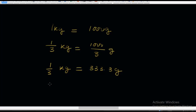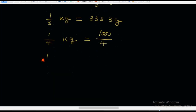What if we say 1 over 4 kg? That is the same as writing 1,000 over 4. So 1 over 4 kg is equal to 1,000 over 4, which is equal to 250 grams. So 1 over 4 kg is 250 grams.